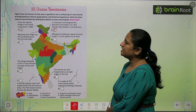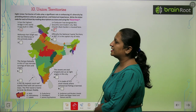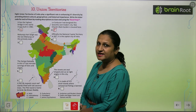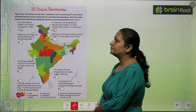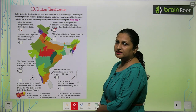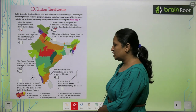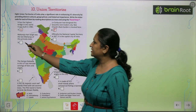Maharaja Hari Singh was the last Maharaja of this princely state. Kahaan ke king the wo? Wo hai Kashmir ke. So you will write F here.